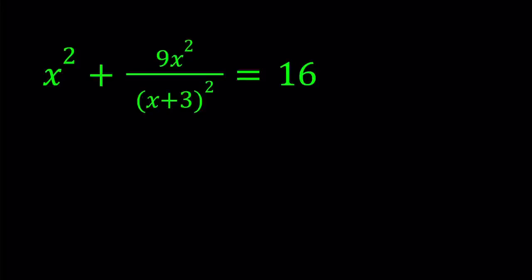Hello everyone. In this video we're going to be solving a nice rational equation. We have x squared plus 9x squared divided by x plus 3, quantity squared, equals 16. And we're going to be solving for x values. I'm going to go ahead and present two methods here and then at the end I'm going to show you a graph, which is pretty interesting. So first method.